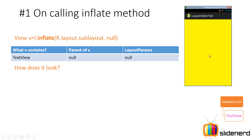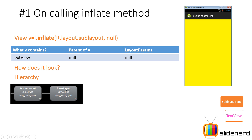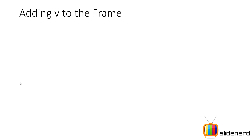How does it look? You see a blank yellow screen, because you have only converted your TextView into a Java object represented by V — you have not added it to your main layout. Your main layout still contains just a FrameLayout and a LinearLayout inside. So you need to add V to one of these. You can add it to the FrameLayout or to the LinearLayout. There are two ways: add it to the frame, or add it to the LinearLayout — they are the only two layouts inside activity_main.